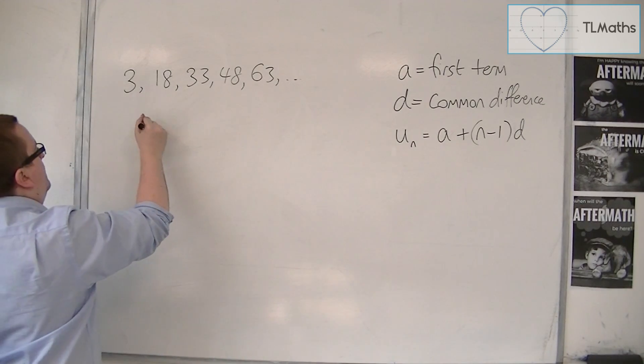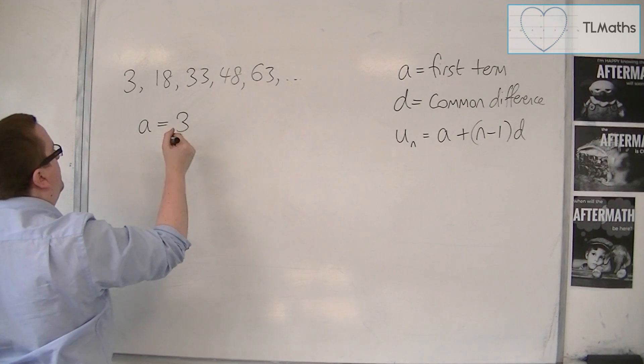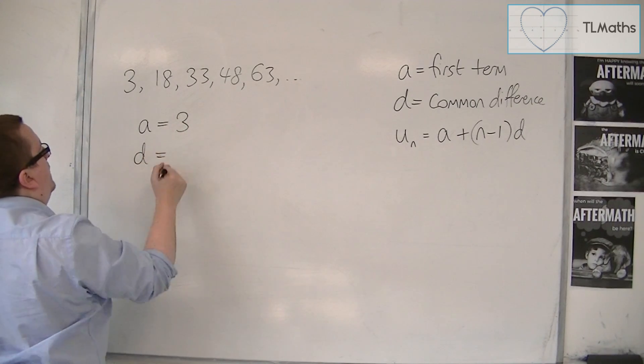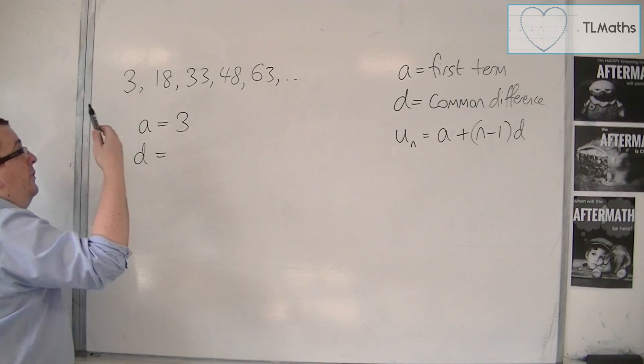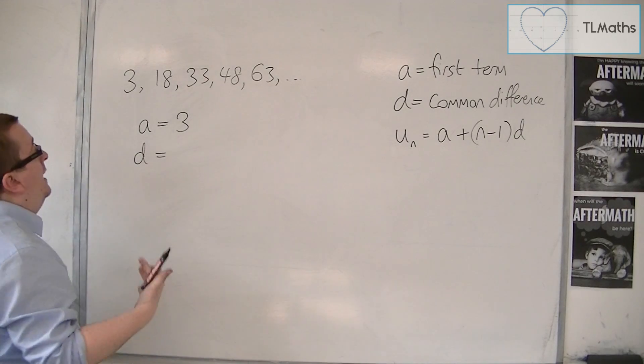So A, the first term, is 3, and D is the common difference, what I'm adding on each time, and that's 15.